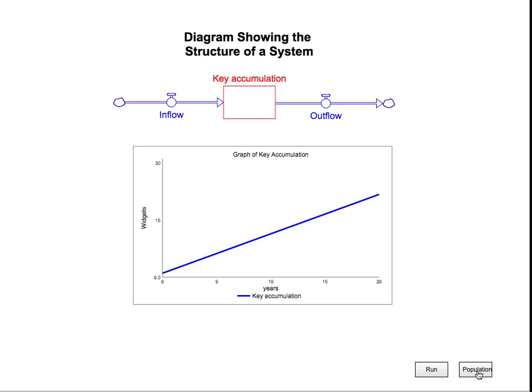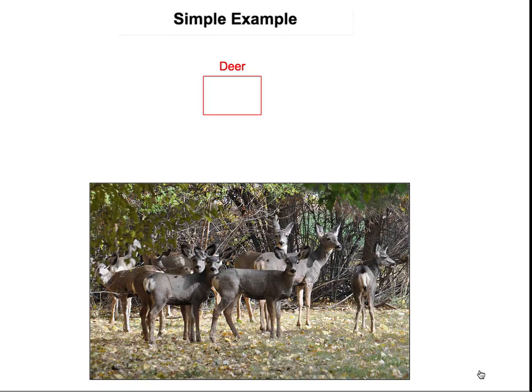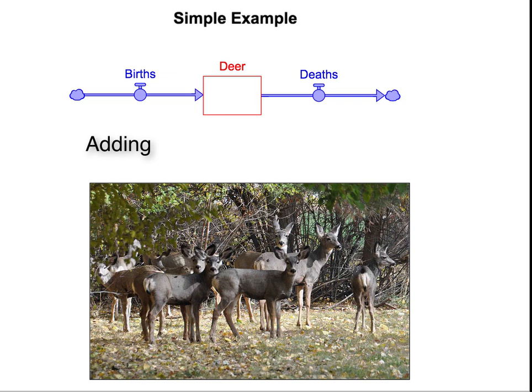Here's a simple example. Let's say we have a population of deer. The number of deer are represented as a stock. They can be born, adding to the population, and they can die, subtracting from the population.